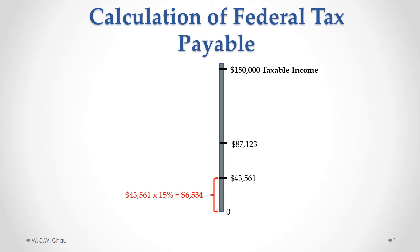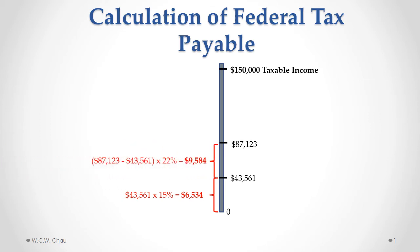The next layer, which brings us up to $87,123, is taxed at a rate of 22%, which gives us tax of $9,584.